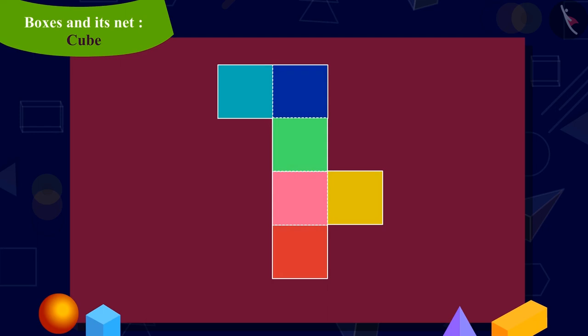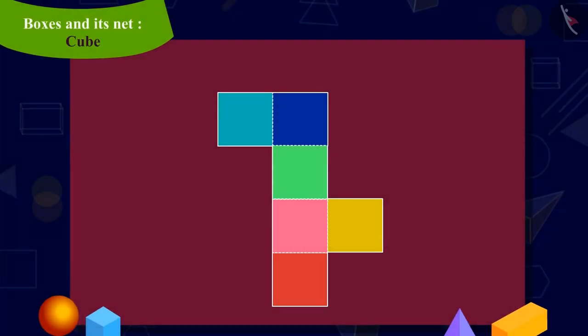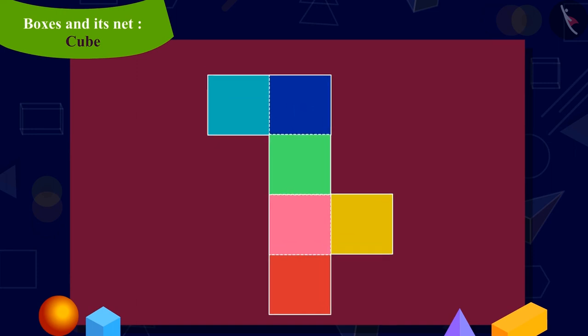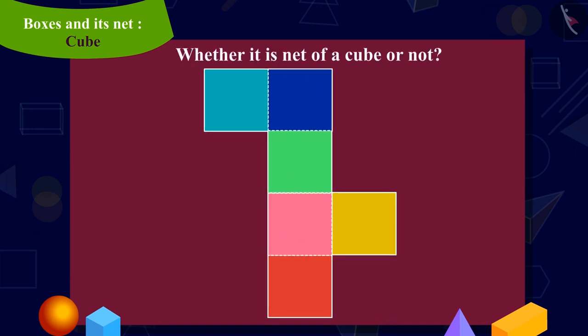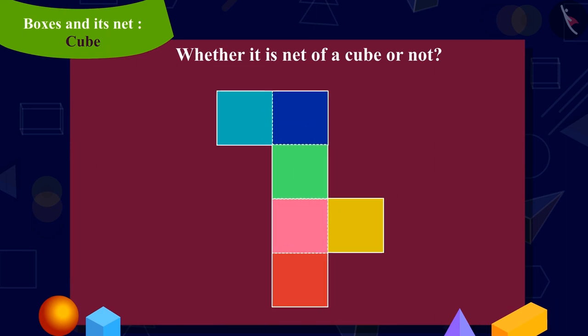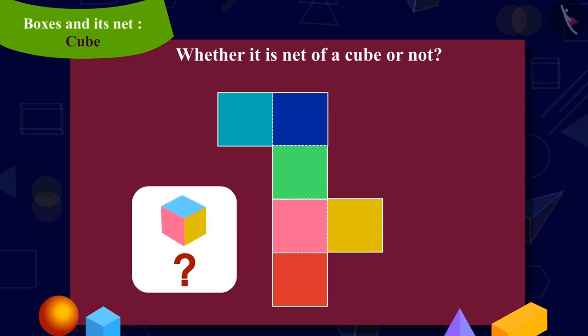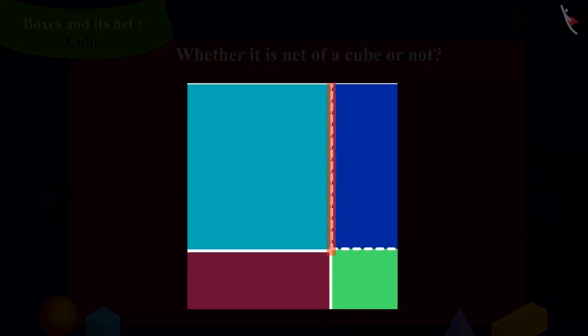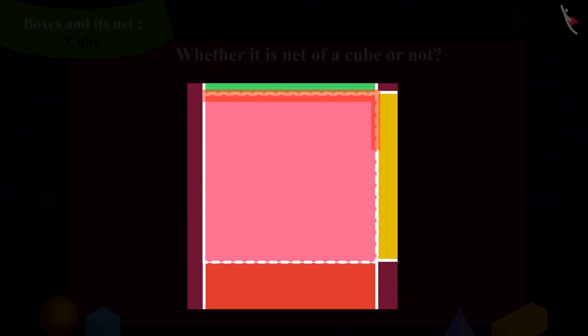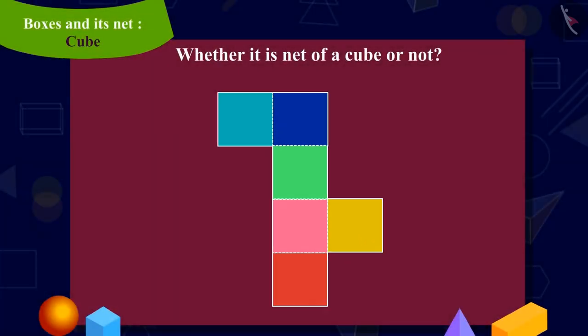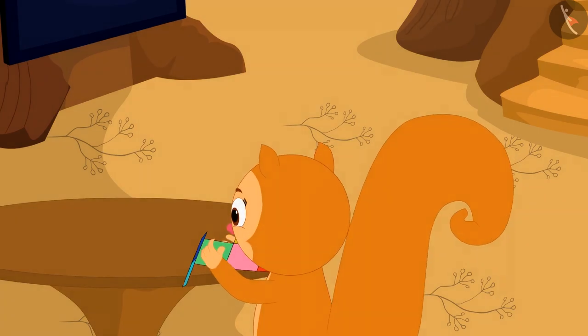Now Chanda quickly took a thick paper and made a shape like this on it. Kids, can you look at this shape and tell whether it is a net of a cube or not? In other words, can we make a cube shaped box by folding this shape on these dotted lines? You can pause the video to find the answer.